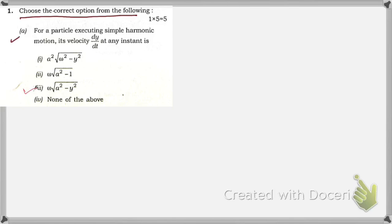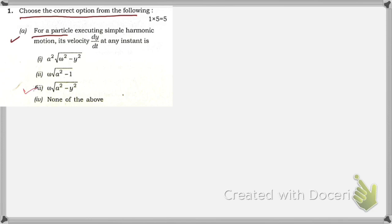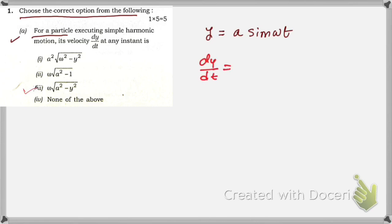The first question asks: for a particle executing simple harmonic motion, its velocity dy/dt at any instant is given by which option? The correct option is three. Suppose we have the equation representing simple harmonic motion: y = A sin(ωt), where A is the amplitude and y is the displacement at an instant t. To find velocity, we differentiate: dy/dt = Aω cos(ωt).